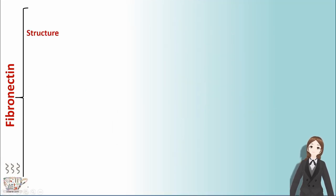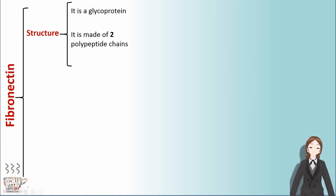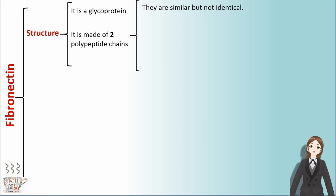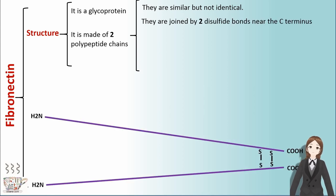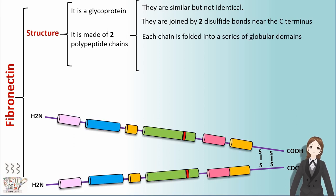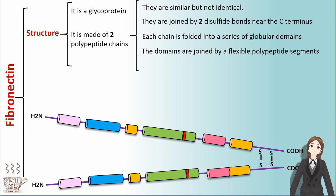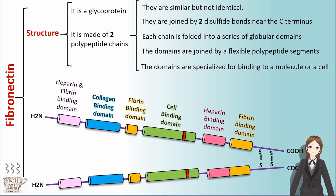Regarding the structure of fibronectin: it is a glycoprotein made of two polypeptide chains that are similar but not identical. They are joined by two disulfide bonds near the C-terminus. Each chain is folded into a series of globular domains joined by flexible polypeptide segments, and the domains are specialized for binding to a specific molecule or cell.